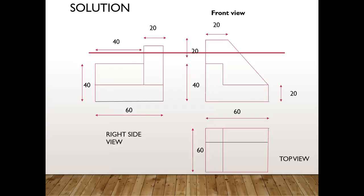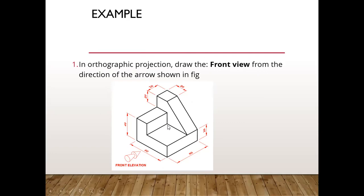For the given problem, we have to prepare the solution. First, let us go with the front view — how the given 3D object can be converted into 2D as per the front view. An observer is standing in front of the 3D object at a particular height, viewing the 3D object from the front view direction. So what are the features, what portions will be clearly observed by the person?